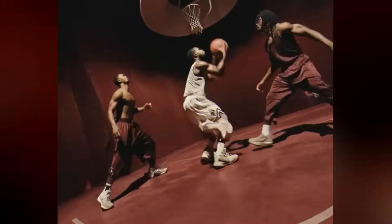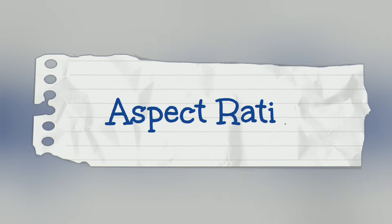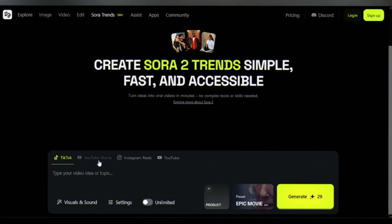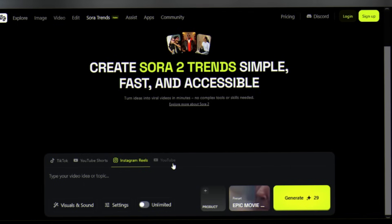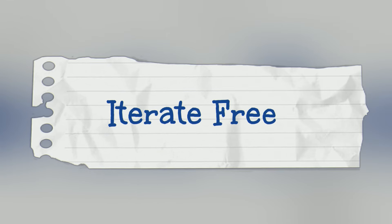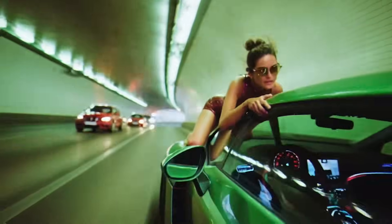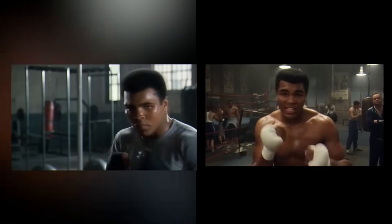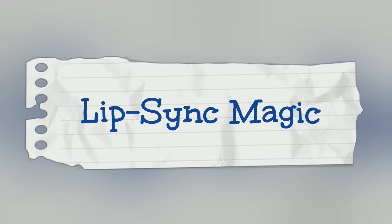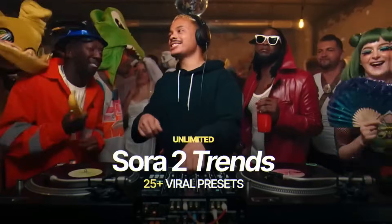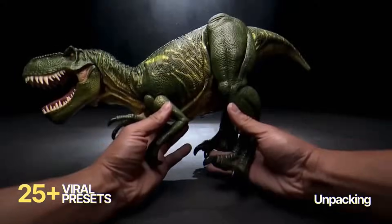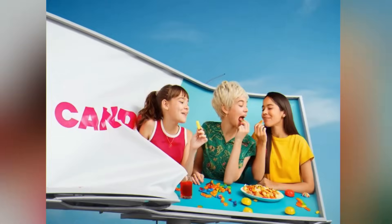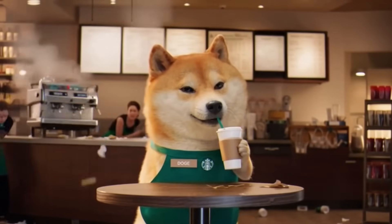Here are pro tips to maximize Sora 2 Pro. Aspect ratios: match your platform — 9:16 for TikTok and Reels, 16:9 for YouTube, 1:1 for Instagram feed. Iterate freely: with unlimited generations, don't settle — try variations and adjust one word in your prompt to see how it changes the result. Lip-sync magic: for talking content, write your dialogue directly in the prompt; Sora 2 Pro's lip-sync is incredibly precise. The Higgsfield platform also offers trends — viral presets for trending content formats, product placement mode for seamless brand integration, and brain rot mode for meme generation. This isn't just a video generator; it's a complete creative ecosystem.